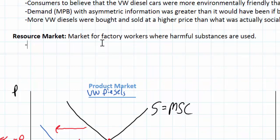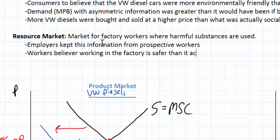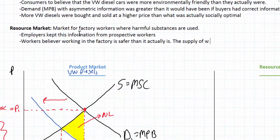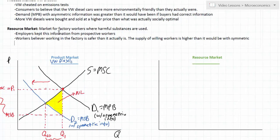Many times workers in these factories had no idea that they were being exposed daily to toxic chemicals that could cause cancer later in life, because employers kept this information from prospective employees. Because of the lack of full information about the employment conditions, workers believed working in the factory was safer than it actually was. Therefore, the supply of willing workers was higher than it would be with symmetric information — if workers had all the information about how dangerous the working conditions were, there would be a smaller supply of willing workers.